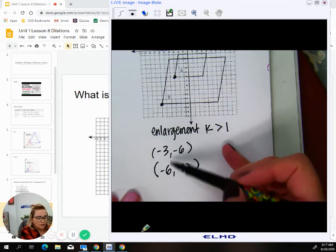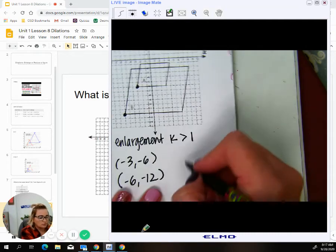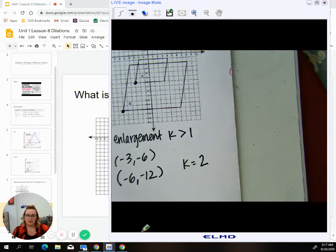So to get from three to six, you would times by two. To get from six to twelve, you would times by two. So that tells us that our scale factor is K is equal to two.